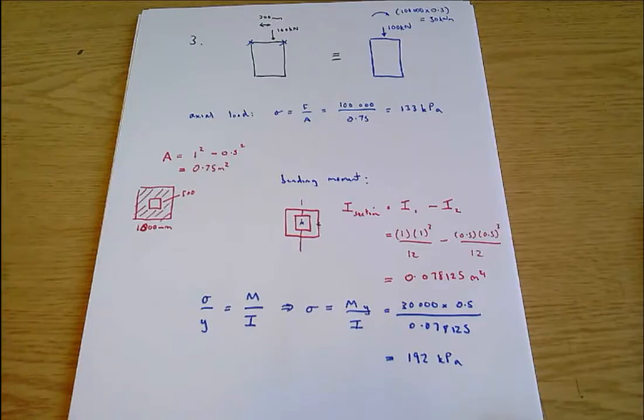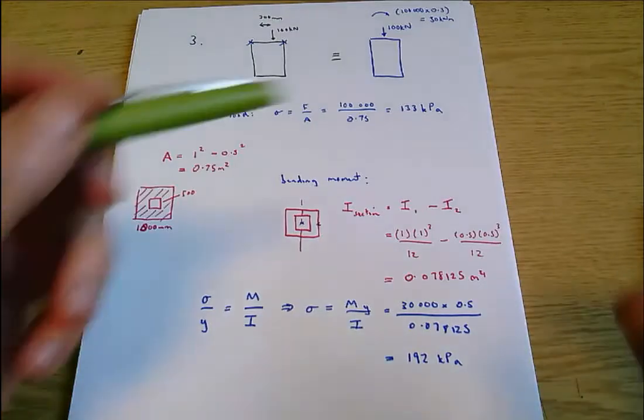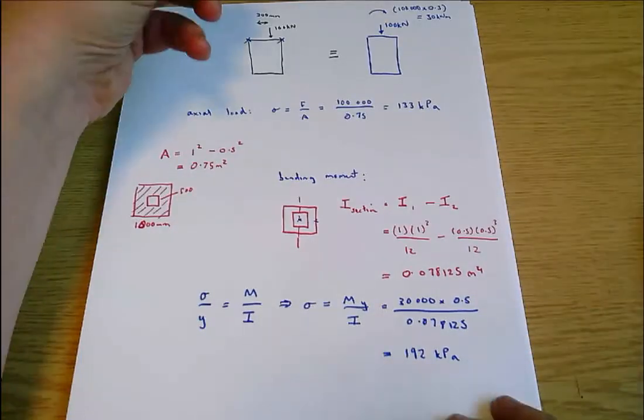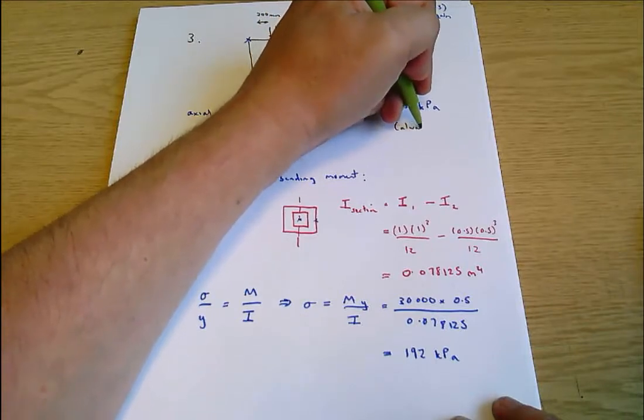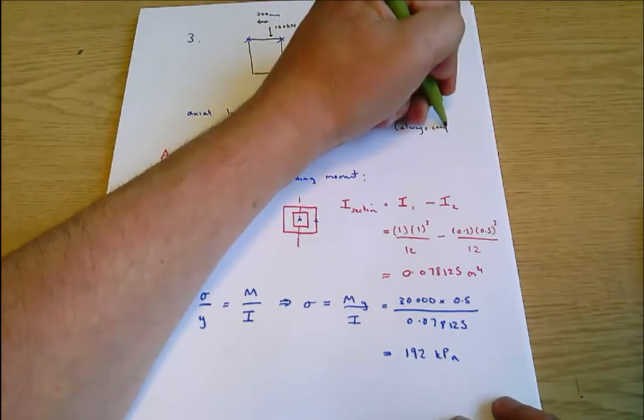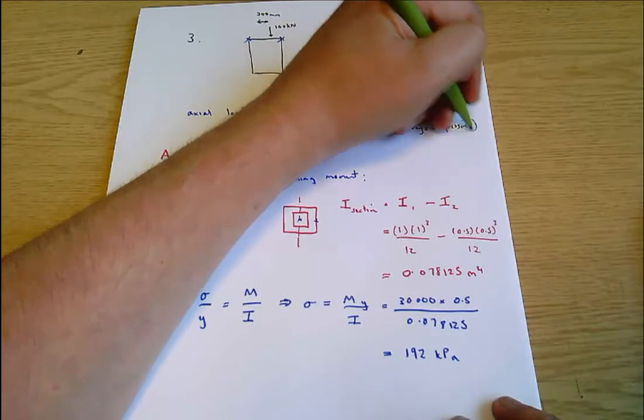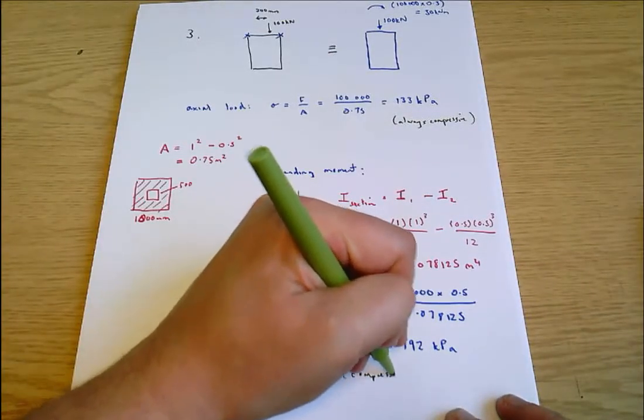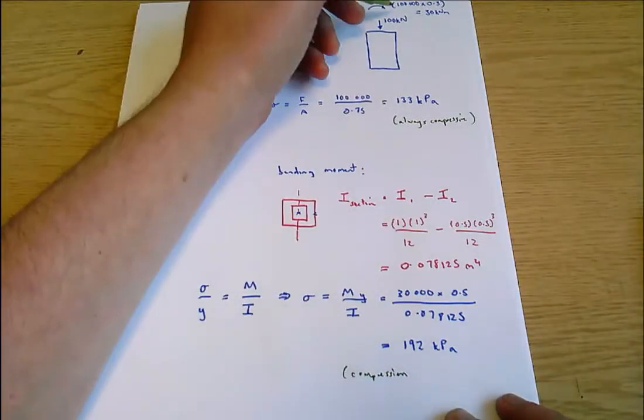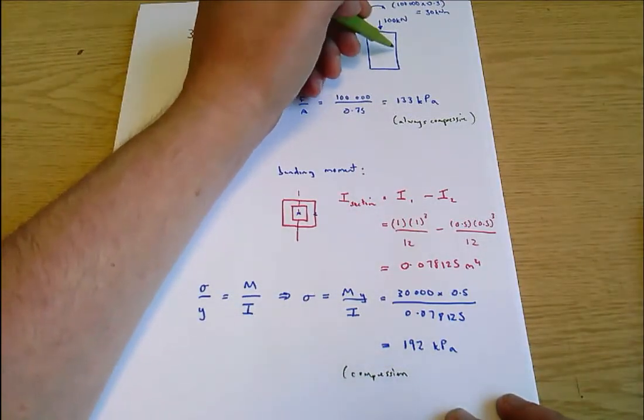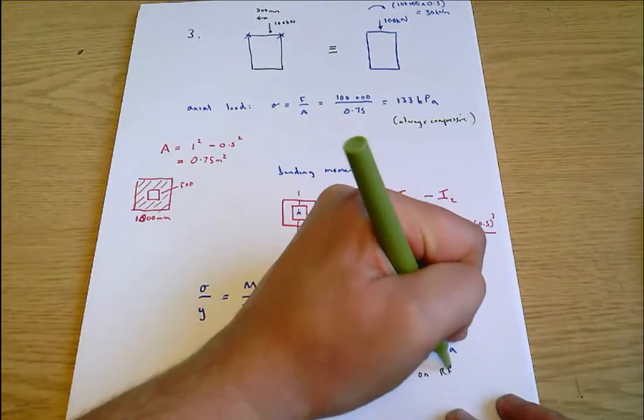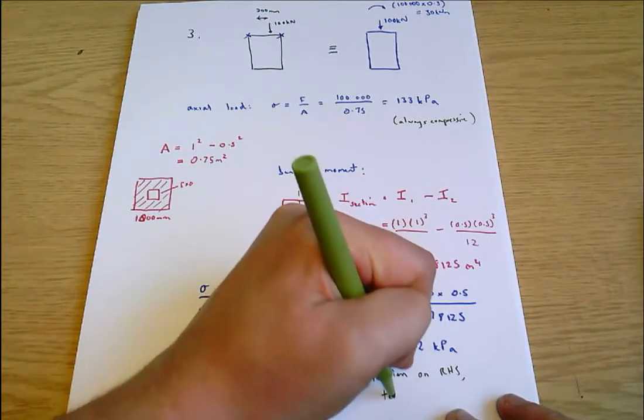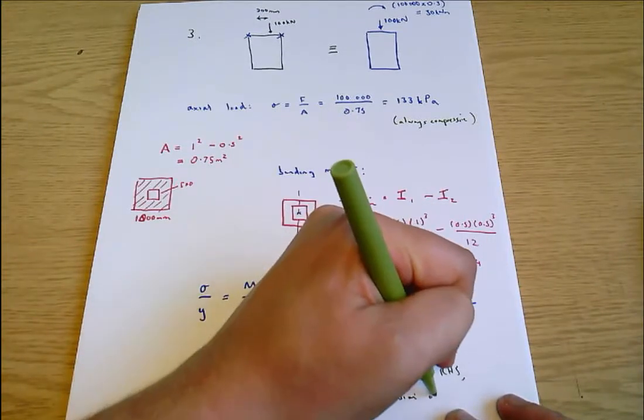Just thinking about some details here. This stress here is always compressive, and this is compression. Well, you can imagine if the bending moment's going like that, then it's in compression on the right hand side and it's in tension on the left hand side.